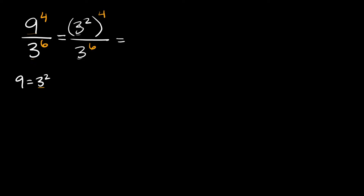Here we have 3 squared in parentheses raised to the 4th power. Whenever you have an exponent raised to another exponent, in order to simplify that you just multiply those together. So 2 times 4 is equal to 8, so here we really have 3 raised to the 8th power. Let's write that down: 3 raised to the 8th power over 3 raised to the 6th power.